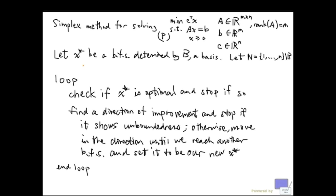We start with a basic feasible solution x star determined by some basis B. Now the question of finding this initial basic feasible solution will be dealt with later. For now, we just assume that we have such a solution at the beginning.